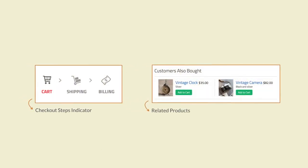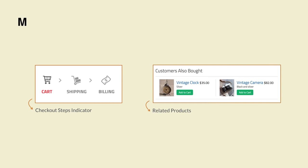Once atoms bind together, they grow in complexity and turn into molecules, which provide more functionality. In our example, the checkout steps indicator and the related product modules are molecules.